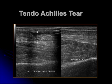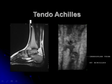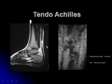The other aspect of tendons is tears. Here is an example of a tendoachilles tear, with the normal tendoachilles on the other side for comparison. This is an MRI and a 3D coronal reconstruction of the same tear of the tendon.